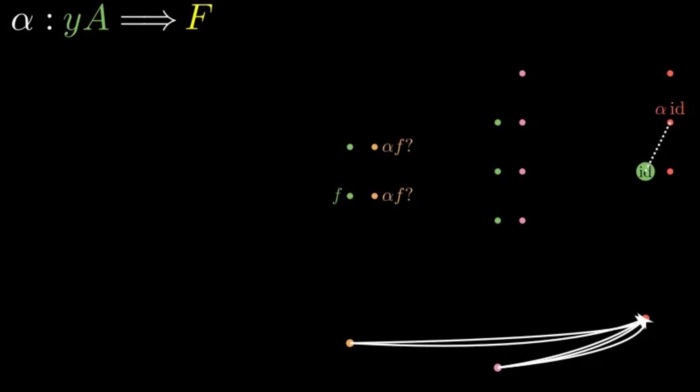We have noticed before that this element is of the form F-star of the identity. So its image under the natural transformation should be F-star of the image of the identity. This forces our choice of where to send the element.